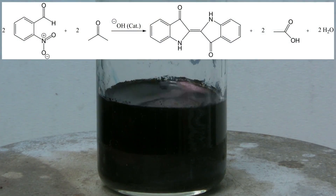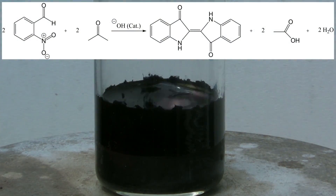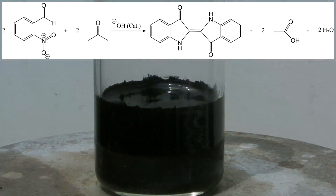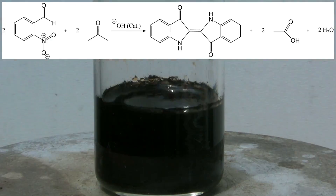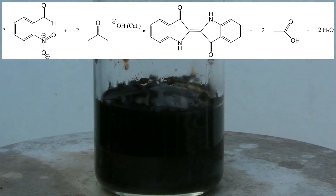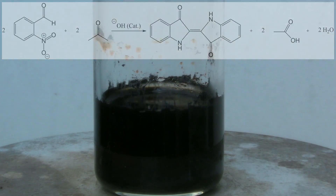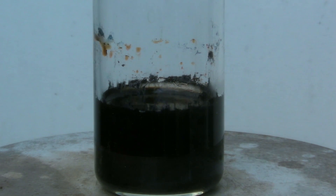The acetone reacts with the 2-nitrobenzaldehyde, which is catalyzed by a base and forms indigo after several steps. This precipitates out of the solution and sometimes forms large shiny crystals.